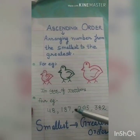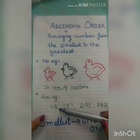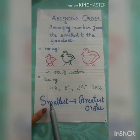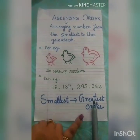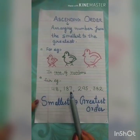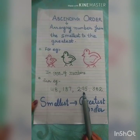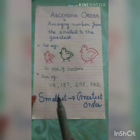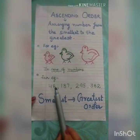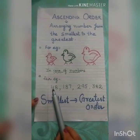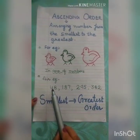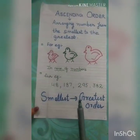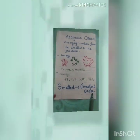In case of numbers, we arrange numbers from the smallest number to the greatest number. You have already done this in class 3 with 3-digit numbers — arranging them from the smallest number to the greatest one. This is called ascending order.